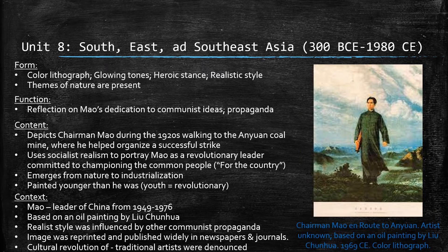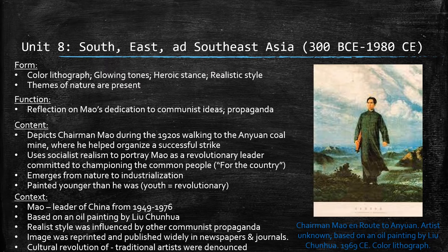For Unit 8, I chose Chairman Mao en Route to Anyuan, which is a color lithograph made in 1969 CE, based on an oil painting by Liu Qinhua. This piece is propaganda spread by the Chinese government around the late 20th century to spread enthusiasm for communism and Mao Zedong as their leader. Being the primary communist leader of China, he was responsible for the political reformation of the country that affected everyone living in China at the time. During his reign, there was more violence present, along with artists fearing for their future as traditional art was denounced, and artists were tortured and killed. This was only one of the oppressions China faced during Zedong's rule. Because Mao Zedong played such an integral role in China's politics and the way of life of those living under his rule, this piece shows an integral symbol of their identity.